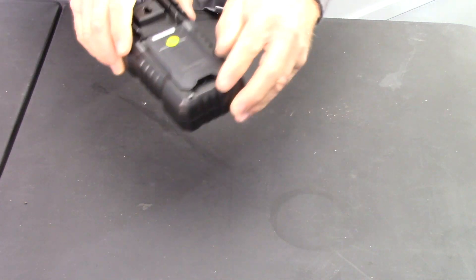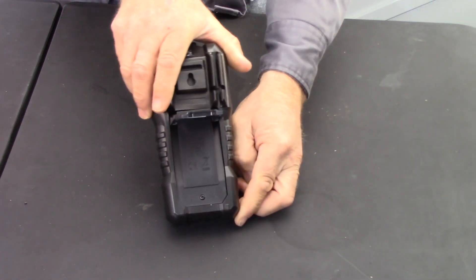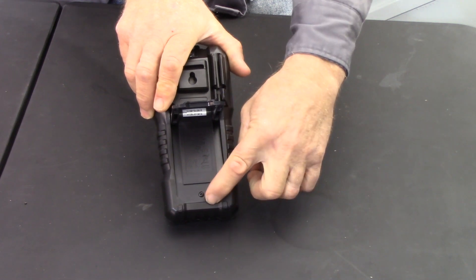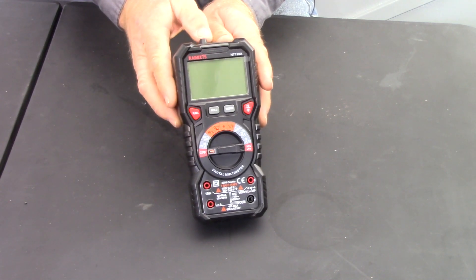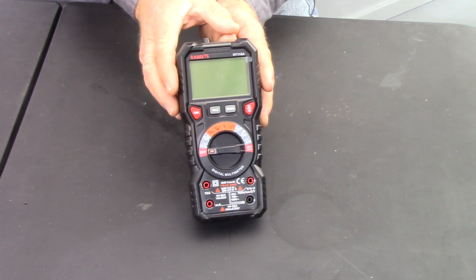It also came with batteries. We'll install those inside the battery compartment by removing that Phillips screw. There you have it, nice looking meter, Kaiwits HT118A.